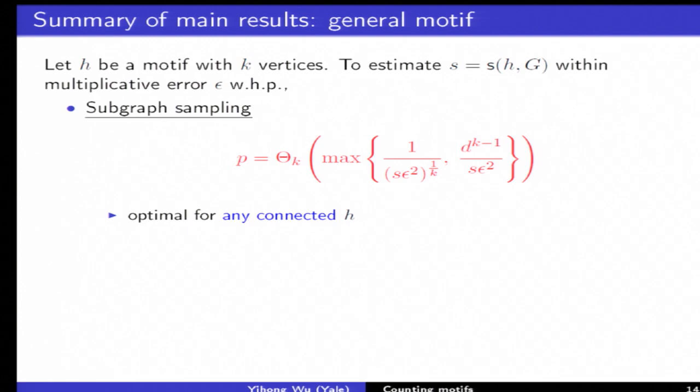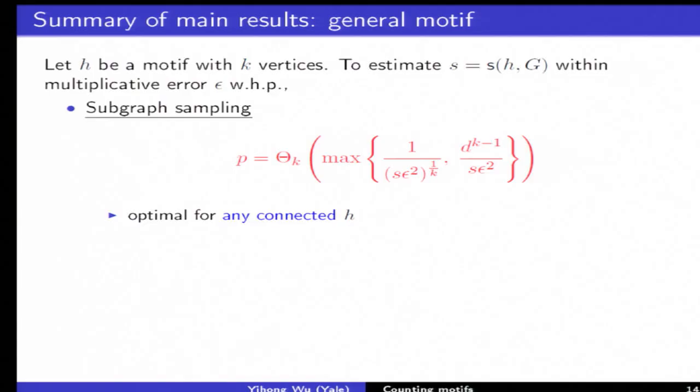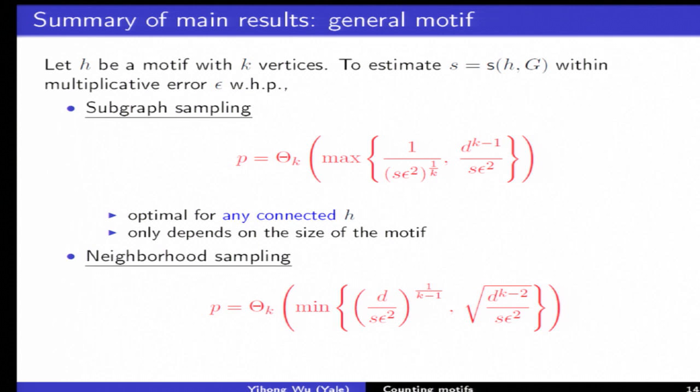For general motifs if I give you a subgraph with K vertices there is the extension of these results. These are essentially optimal for any connected subgraphs if you want to count those, and only depend on the size K and not on the actual topology. For open triangle and closed triangle in the worst case it's exactly the same. For neighborhood sampling we get different results which is not just replacing max by min, it's more subtle. It's optimal again for connected graphs but only in special cases because the lower bound construction is the main hard part. We can only prove for vertices up to four vertices or for cliques or for cycles.